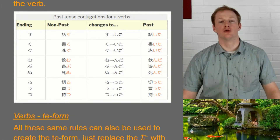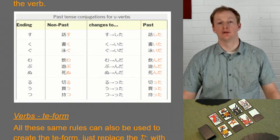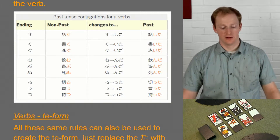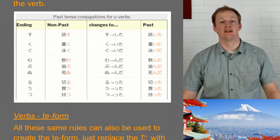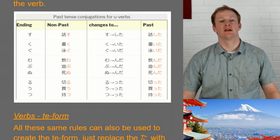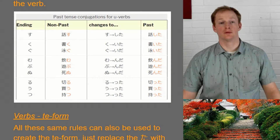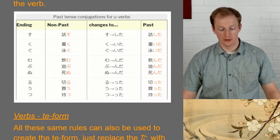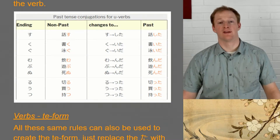The next group is verbs ending in ku or gu. We replace ku with ita. Our example for ku is kaku — to write — so we drop the ku and replace it with ita, giving us kaita. The next verb is oyogu, meaning to swim, where we replace gu with ida, giving us oyoida.